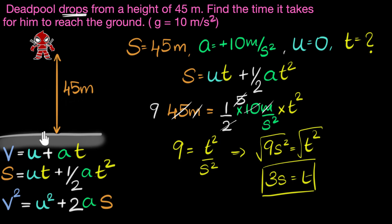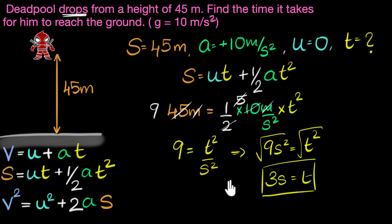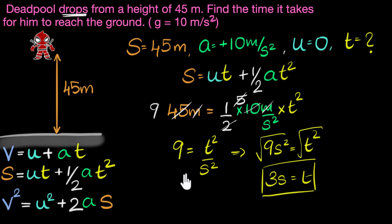That means Deadpool takes 3 seconds to land on the ground. Now, square root of 9 is both plus 3 and minus 3, so why did we ignore minus 3? Because if time is minus 3, it is less than zero, which represents the past. Time zero is the present — less than zero is past, more than zero is future. Since we're asked how long it takes after he drops, we care about the future. So in most physics problems, we only consider the positive time and ignore the negative.